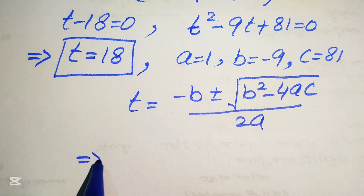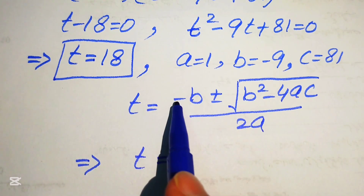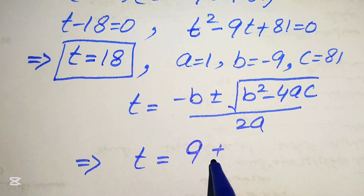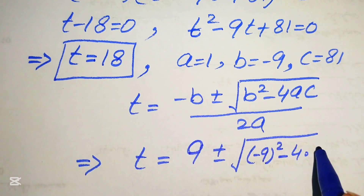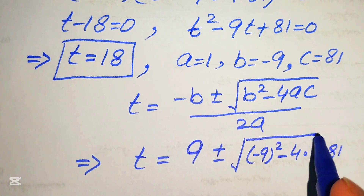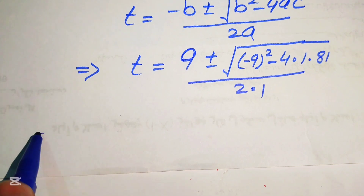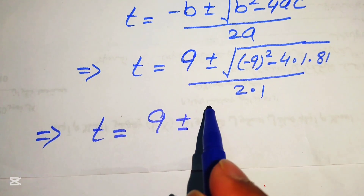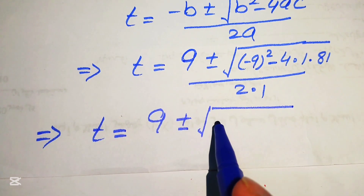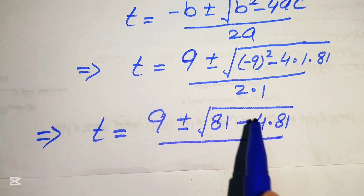Substituting the values: t = (9 ± √((-9)² - 4·1·81)) / (2·1). This gives t = (9 ± √(81 - 324)) / 2. We then simplify the discriminant: 81 - 4 times 81 equals 81(1 - 4) = 81(-3), divided by 2.